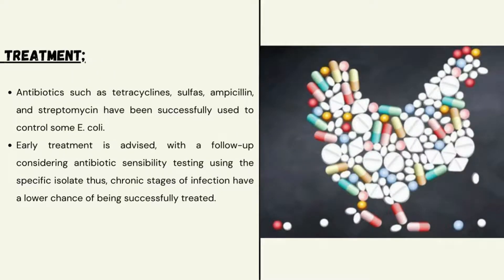Treatment of colibacillosis: antibiotics such as tetracyclines, sulfas, ampicillin, and streptomycin have been successfully used to control E. coli. Early treatment is advised, with follow-up considering antibiotic sensitivity testing using the specific isolate. Chronic-stage infections have a lower chance of being successfully treated.